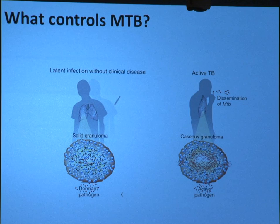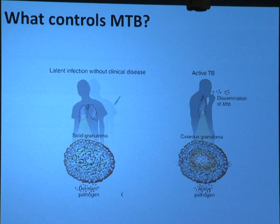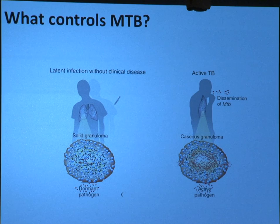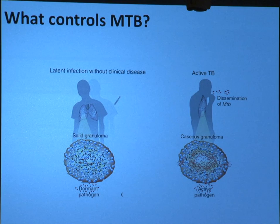When we think about TB, we think about two clinical states. About 95 to 99 percent of infected individuals will control the pathogen and be called latently infected. These individuals contain the bacteria within interesting architectures in the lungs called granulomas, where the bug can replicate even when latently infected. For whatever reason that is not fully understood, one to five percent of individuals will lose control of their bacteria, become actively infected, and these bugs will proliferate very aggressively within granulomas, eventually leak out and cause disseminated disease, leading to symptoms of active disease and eventual mortality.